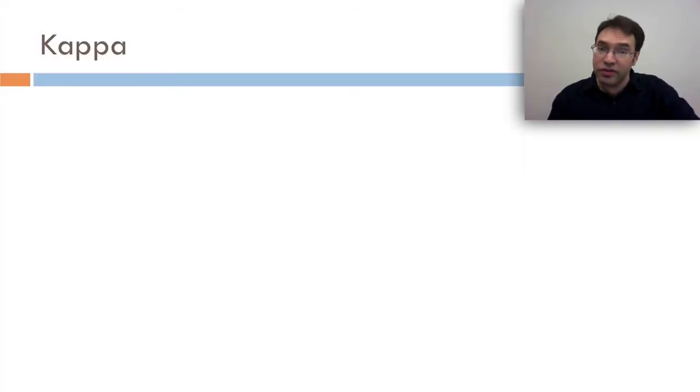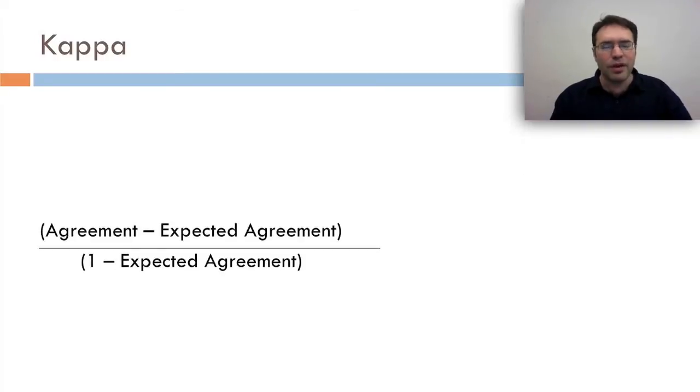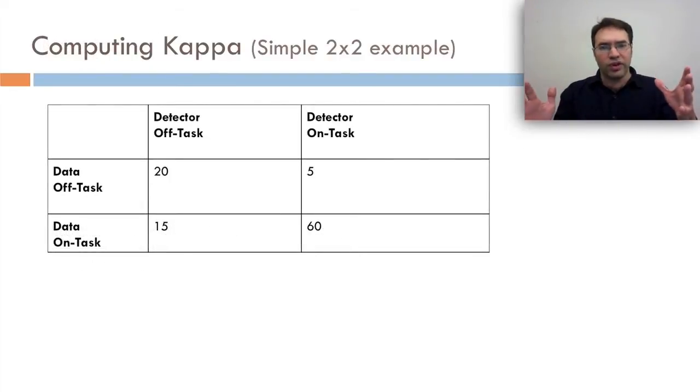Another metric that we can think about that's a little better is kappa, also known as Cohen's kappa. Kappa is the agreement minus the expected agreement divided by 1 over the expected agreement. So of the total distance you can go from whatever the expected agreement is to perfect, kappa is how far you are along that scale, what percentage of the way you are. With kappa, you might be saying, how do you calculate that expected agreement? Where does it come from? Where it comes from is the base proportions of the two groups.